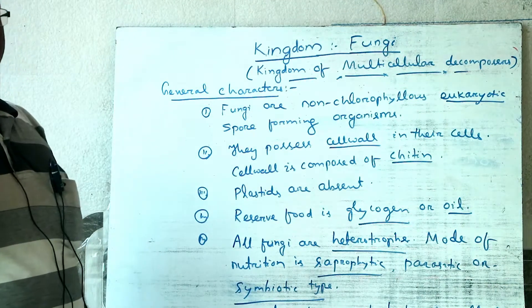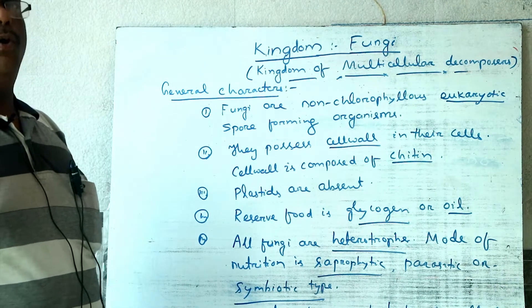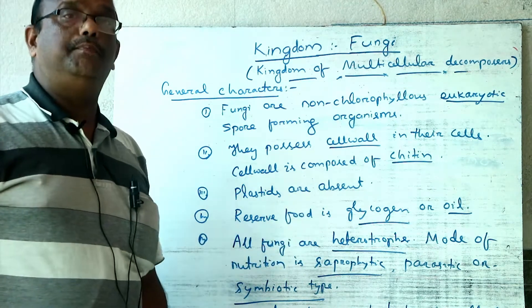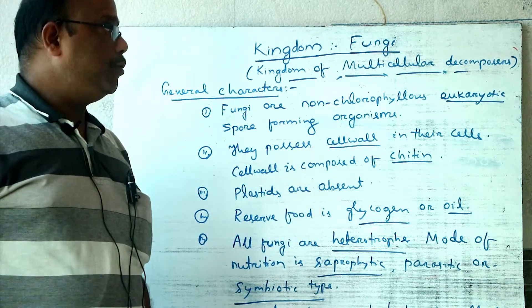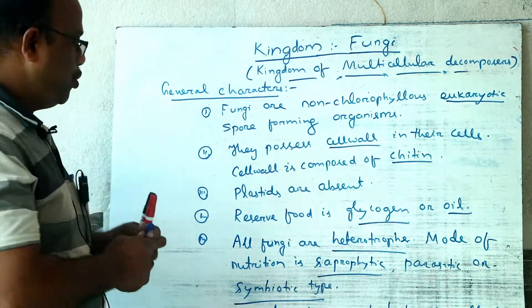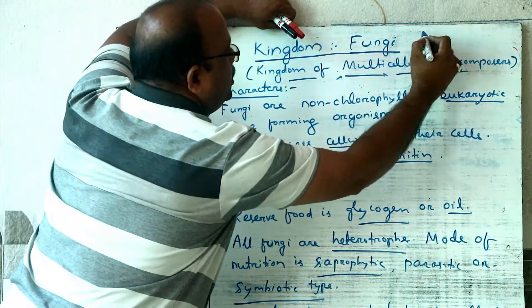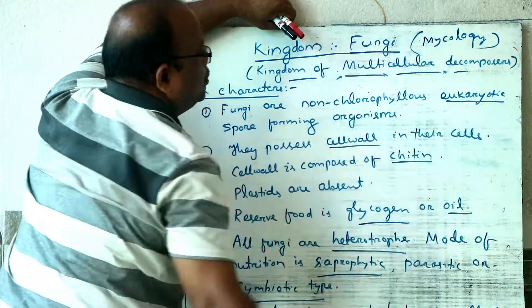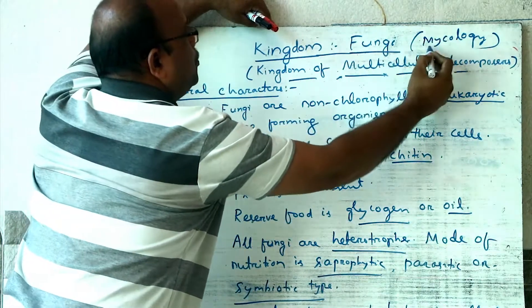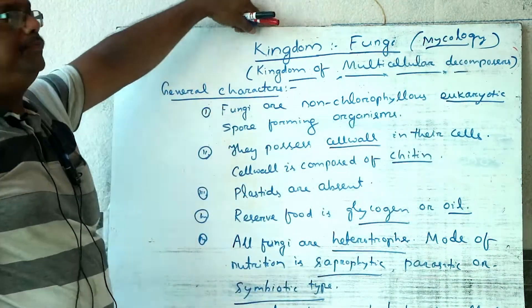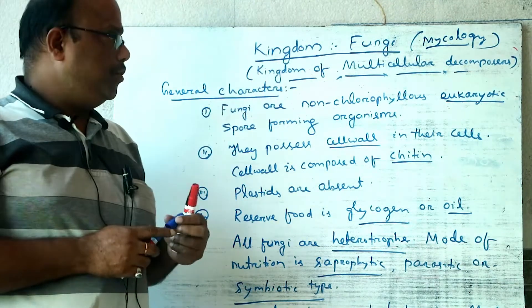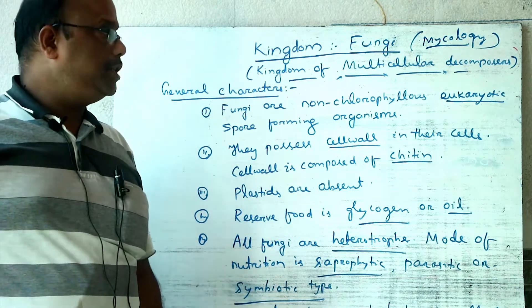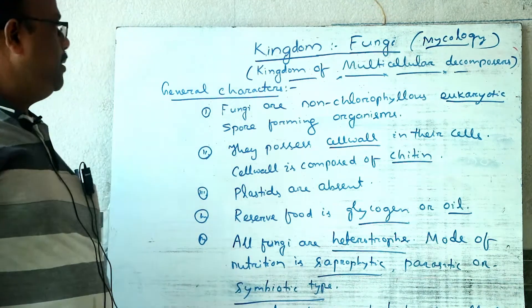Fungi in India are called kapoka, chattu, or philpi. The singular form is fungus. Fungi are also known as molds or mycetes. The study of fungi is called mycology. The study of algae is called phycology. The study of fungi is called mycology.